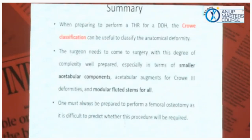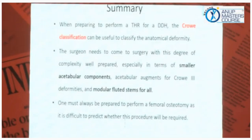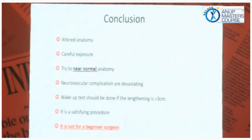To summarize: when preparing to perform a THR in DDH, the Crowe classification can be used safely for anatomical deformities, especially of the acetabulum. Surgeons need to come to this surgery well prepared for its degree of complexity — especially for the smaller acetabular component and modular fluted stem. One must always be prepared to perform a femoral osteotomy; it is difficult to predict when it is required. Always have NESS case and cable with you. In conclusion: you will find altered anatomy; careful exposure; try to approach near-normal anatomy; neurovascular complications are devastating; wake-up test should be done if lengthening is more than 3 cm. It is a satisfying procedure, but it is not a beginner's surgery.